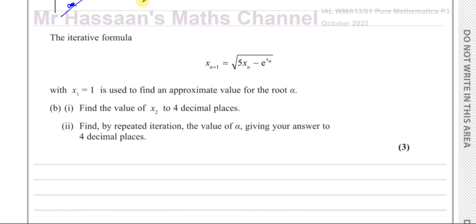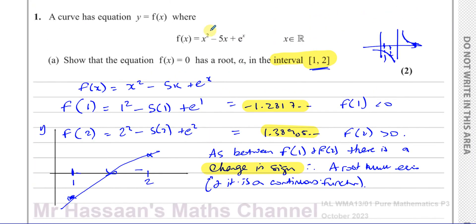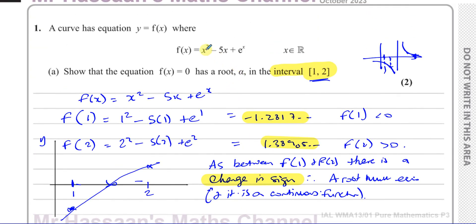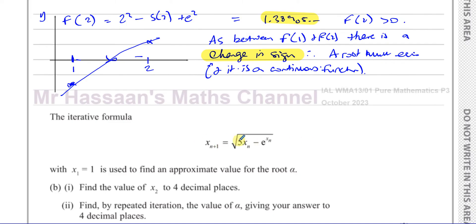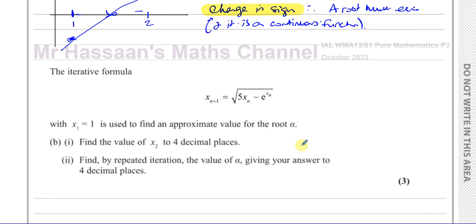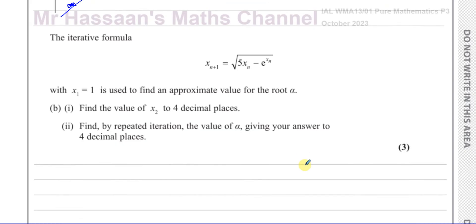Now, the iterative formula: xₙ₊₁ equals the square root of 5xₙ minus e to the power of xₙ, with x₁ equals one, is used to find an approximate value for the root. The iterative formula is found by making one of the x's the subject when you write f(x) equals zero. Here they've added 5x and subtracted e to the power of x from both sides and found the square root. This helps us find the root of equations which are not easy to solve algebraically — it's a manual method of finding the root to more and more accuracy.